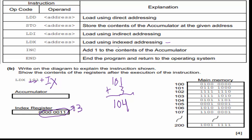Load using indexed addressing means we take the address they give us and add the index register. In this case, 101 plus three is 104. I look at address 104 and see 01011101, so I write that down in my accumulator. Just like that, we've picked up four points on the exam by using the address, adding the index register, getting to the right address, and populating the accumulator. Cambridge does this to eliminate the possibility of random guessing.